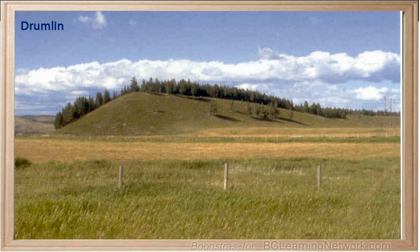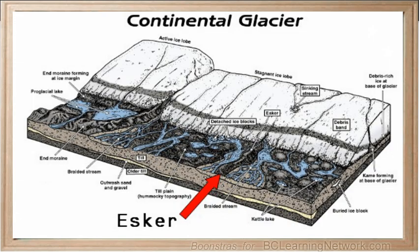Drumlins vary in length from 60 metres to just over 1 kilometre. An esker is a long, narrow, winding ridge composed of stratified sand and gravel deposited by a meltwater stream that was flowing under the glacier.